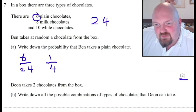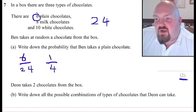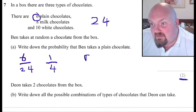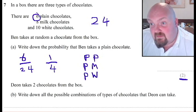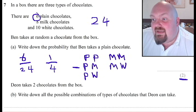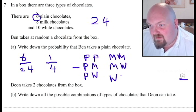Part B says that Deon takes two chocolates from the box. Write down all the possible combinations of chocolates that Deon can take. So we need to do this in a structured and an ordered fashion. He could take a plain and a plain. He could take a plain and a milk. He could take a plain and a white. He could also take a milk and a milk or a milk and a white. We don't need to write milk and plain because we've already got it here.